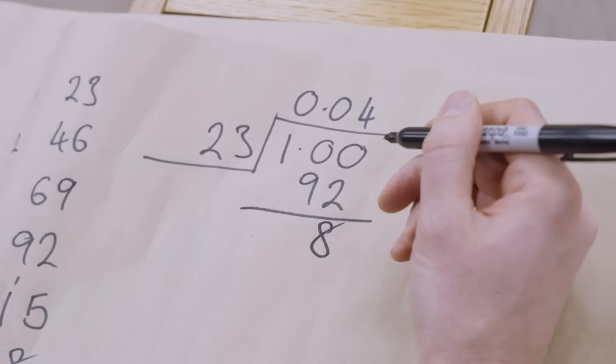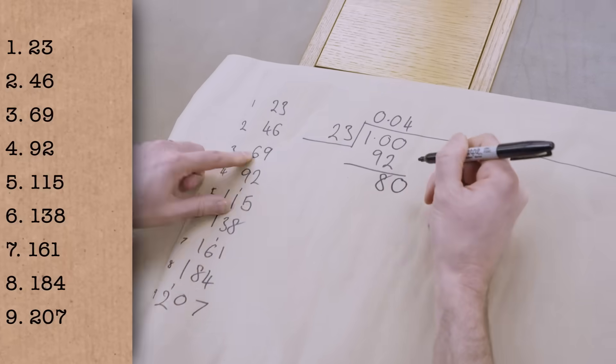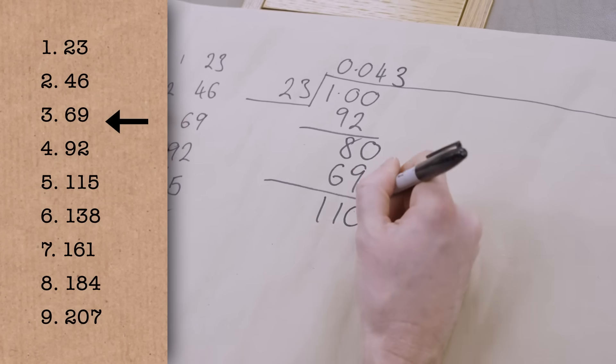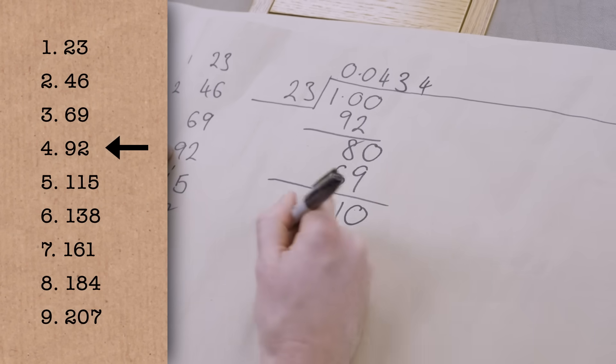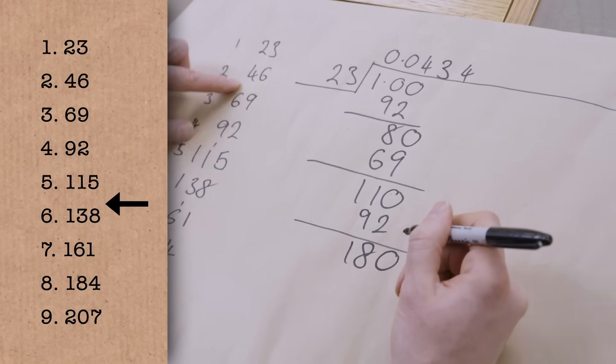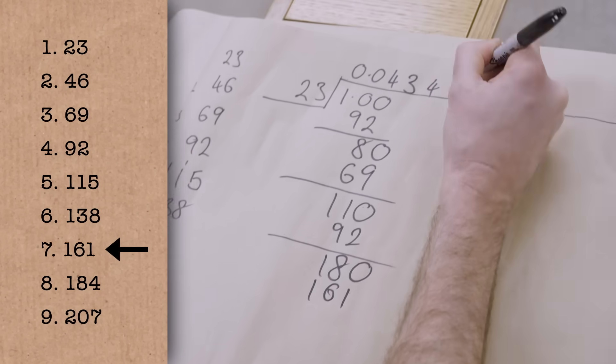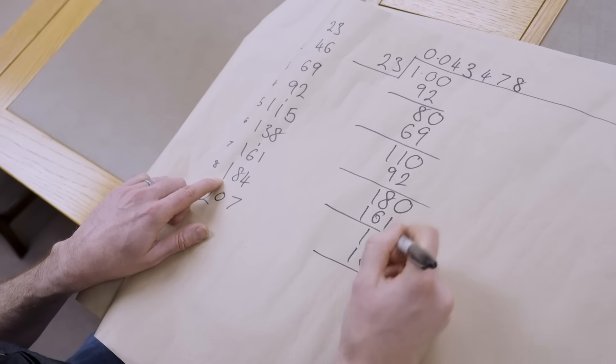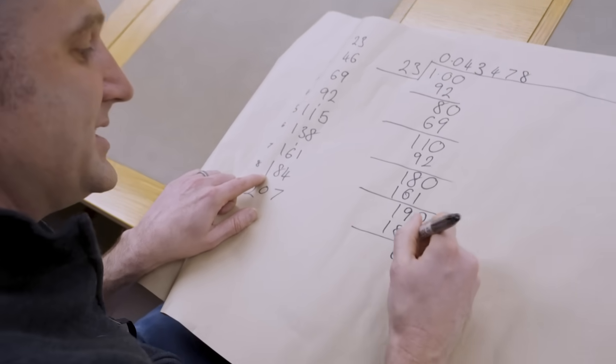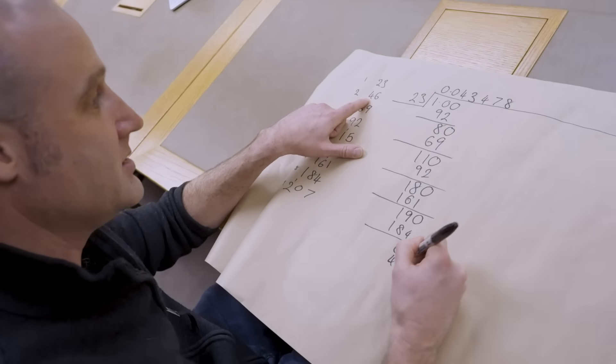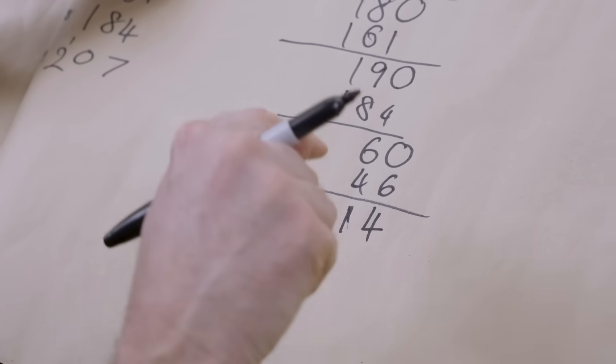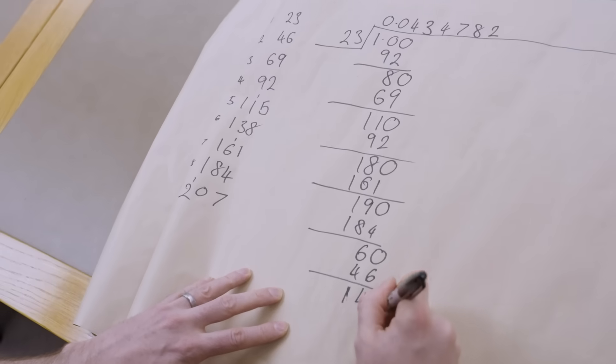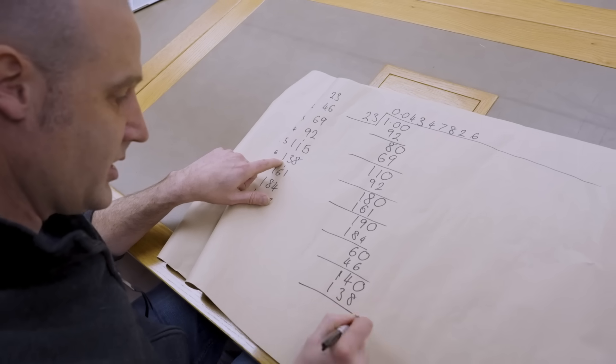Then if we subtract that off, that's eight. Okay. So now, it doesn't go into eight. It does go into 80. 69 is the biggest one we're going to have. And that's a three. Subtract that off. We're left with 11. Doesn't go into 11. 110. Yeah, 92. And that's four times. Four there. We subtract this off. That's going to be 18. Doesn't go into 18. 180. Yes. That's going to be 161 is the next biggest one. Seven times. As you can see, once you get into the swing of this. 19. 190. 184. Eight times. Subtract that off. Six.